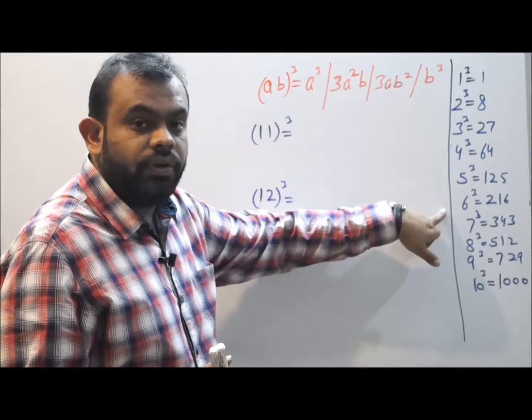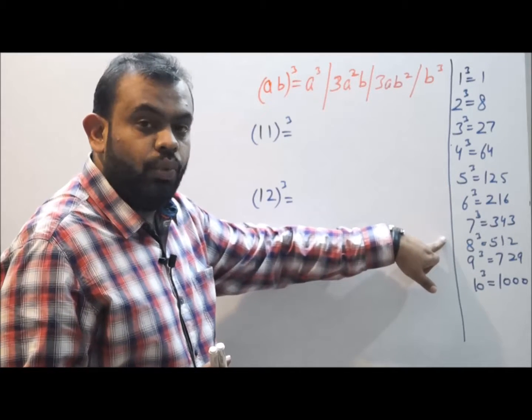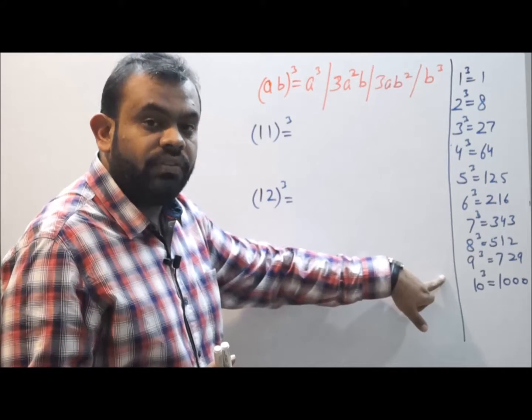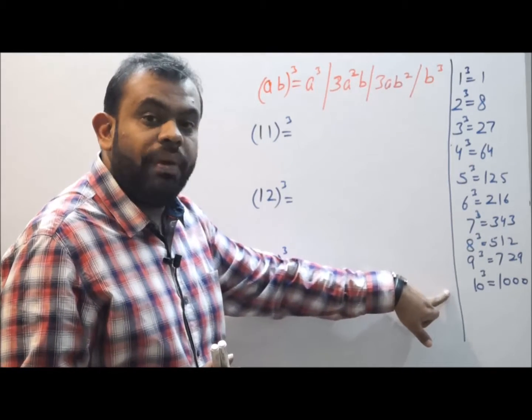6 cube is 216, 7 cube is 343, 8 cube is 512, 9 cube is 729, and 10 cube is 1000.